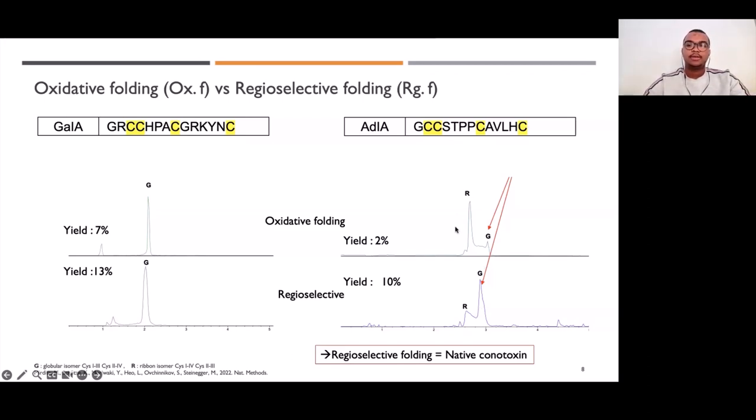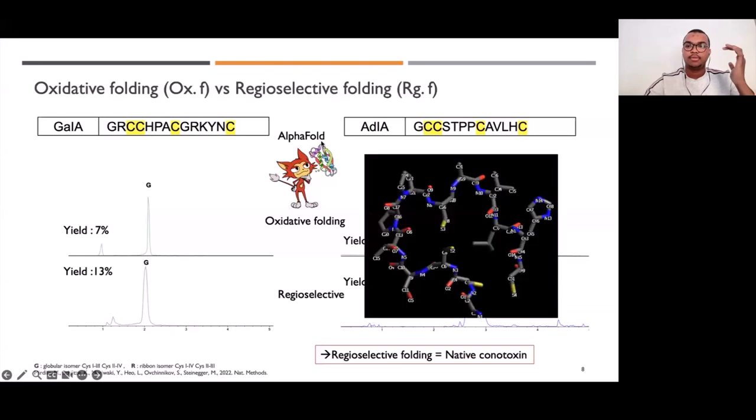So we were wondering why with oxidative folding, it gives us this ribbon isomer. We know that with oxidative folding, the thermodynamically stable isomer is formed. So we wanted to predict the disulfide bonds of these two conotoxins. We ran it on AlphaFold, and it gives us this structure, which is the more stable one for AD1A. Here we can see that cysteines 1 and 4 are located in the same places, so they can make a disulfide bond, and cysteines 2 and 3 are very close here to make the disulfide bond. This is why we get the ribbon isomer with oxidative folding, because this one is the most stable chemically.